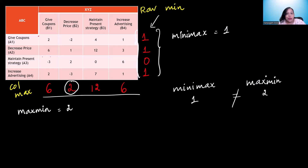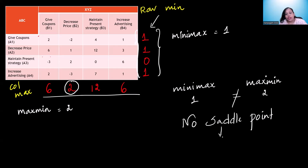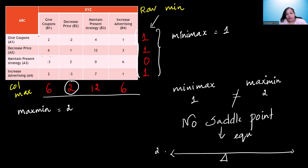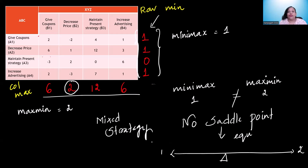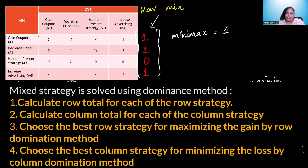Minimax is not equal to maximin, which means clearly there is no saddle point. The saddle point in simple terms is the equilibrium. When there is equilibrium, both scenarios must have the same value — it could be any value, say 8 or 10, but it must be the same. Since there is no saddle point, we are going to use a mixed strategy.